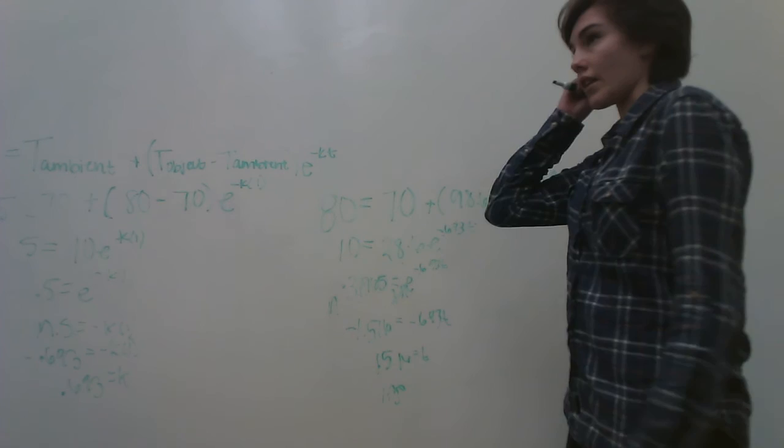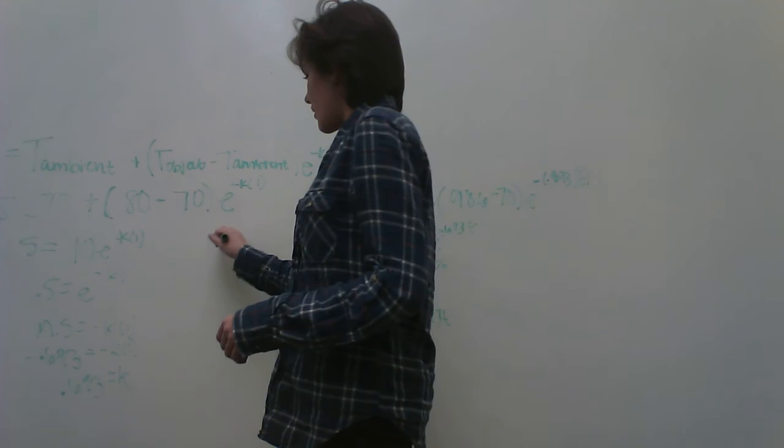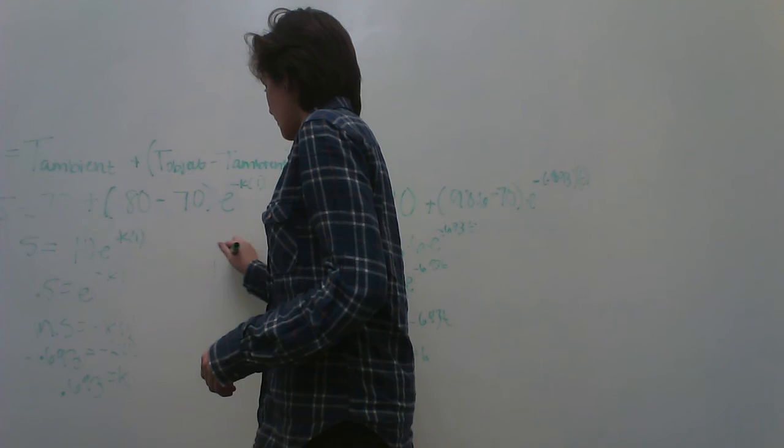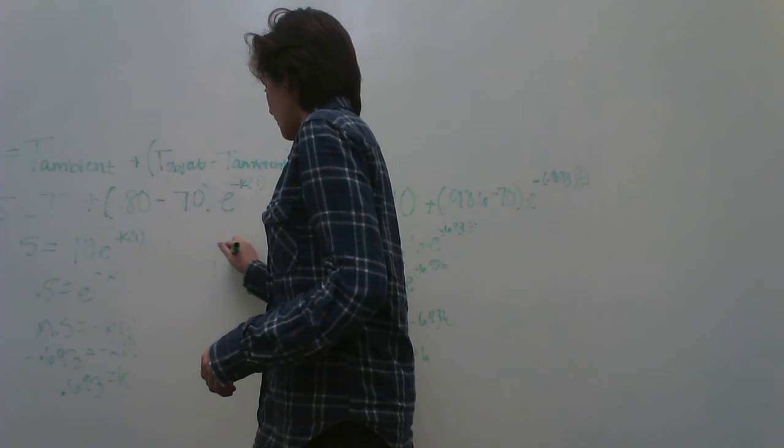So when you do that, and the body was initially found at 6 o'clock, you're going to go from 6 o'clock minus an hour and 30. You come out with 4:30. So the body was initially dead at 4:30 PM. And that's how you figure out the problem.